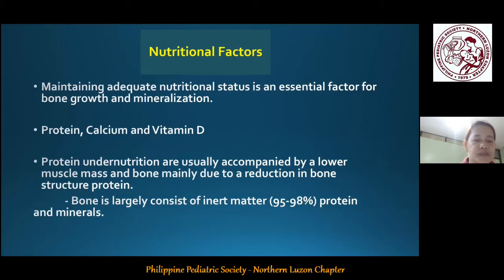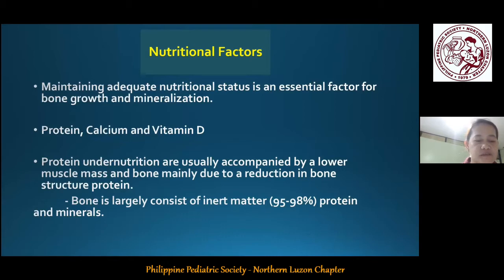The growth and development of our bones requires an adequate supply of many different nutritional factors. Of the individual nutrients, particular attention has been paid to protein, calcium, and vitamin D. Protein is one of the nutritional factors involved in the process of bone mineralization, since bone largely consists of inert matter minerals and proteins. The protein component is composed of collagen type 1 and other matrix proteins. Hence, protein undernutrition is usually accompanied by lower muscle mass and may lead to a reduction in bone structure.